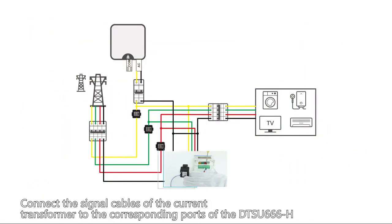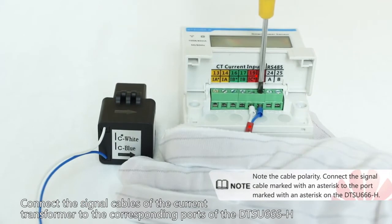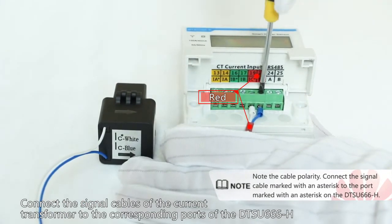Connect the signal cables of the current transformer to the corresponding ports of the DTSU-666H.